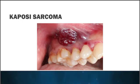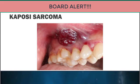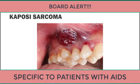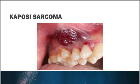Kaposi sarcoma is a board alert. It is an opportunistic neoplasm — a cancer that occurs in patients specifically with HIV/AIDS. This lesion appears as a reddish-purple flat or raised lesion anywhere in the oral cavity. It is a characteristic neoplasm which, if identified, would fulfill the criteria for the diagnosis of AIDS. If a board question asks about Kaposi sarcoma, you need to associate that with the diagnosis of AIDS.